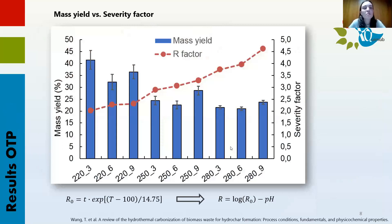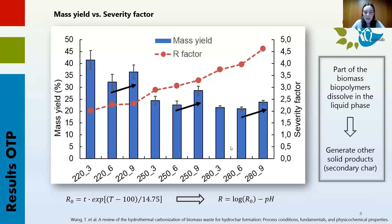Now for the results from the olive tree pruning carbonization. The severity factor, represented as the R factor, allows for understanding the effect that reaction parameters have on the conversion of biomass. Generally, the trend of mass yield decreases with increasing severity. At the same reaction temperature, a decrease in mass yield from three to six hours is first seen, followed by an increase from six to nine hours. This behavior may be because part of the biomass biopolymers dissolve into the liquid fraction and then further react to generate other solid products, commonly known as secondary char, which can fill the pores of the primary char, therefore increasing mass yield.